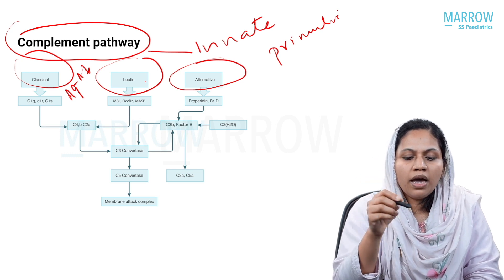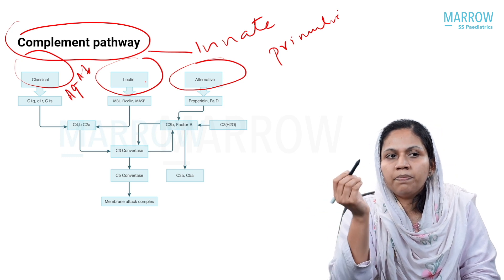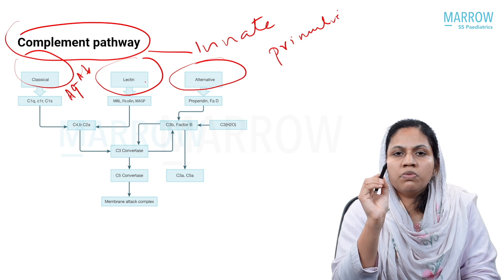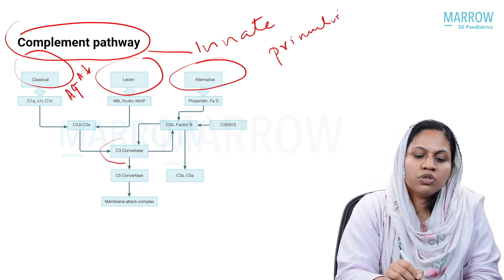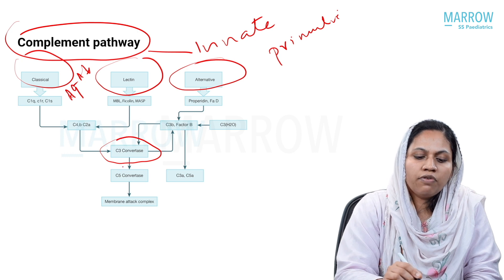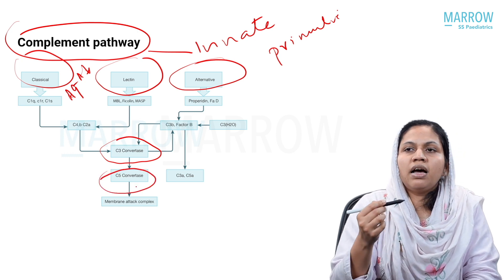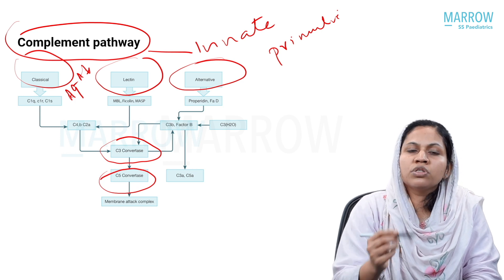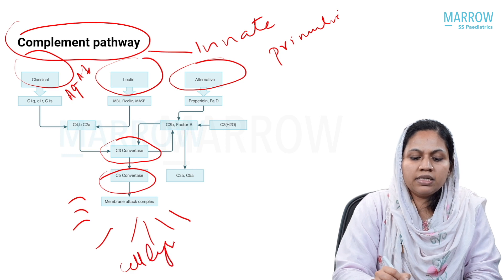Lectin pathway is activated by bacterial products like lipopolysaccharides and mannan-specific binding lectin. All these bacterial products activate this pathway. And if you keep the pathway very simple, there are two main steps: formation of C3 convertase and formation of C5 convertase. C5 convertase formation is the last step which leads to the formation of membrane attack complex and cell lysis.